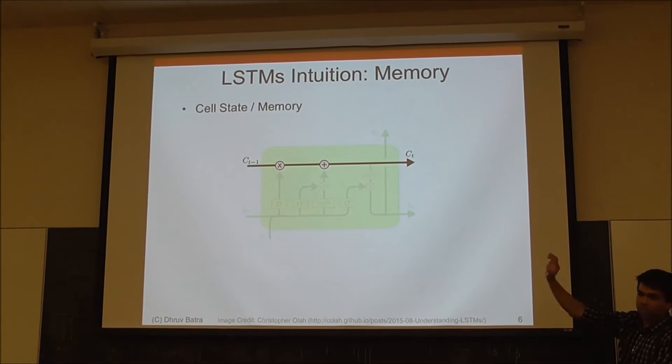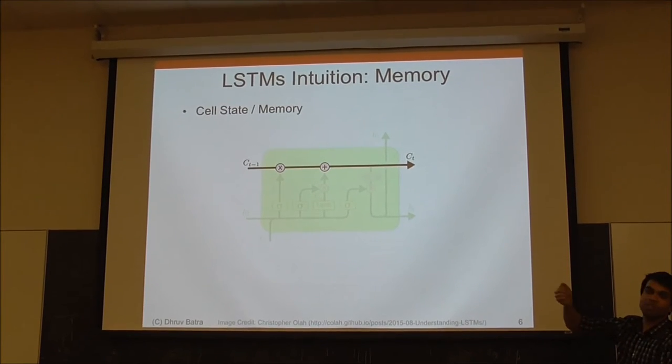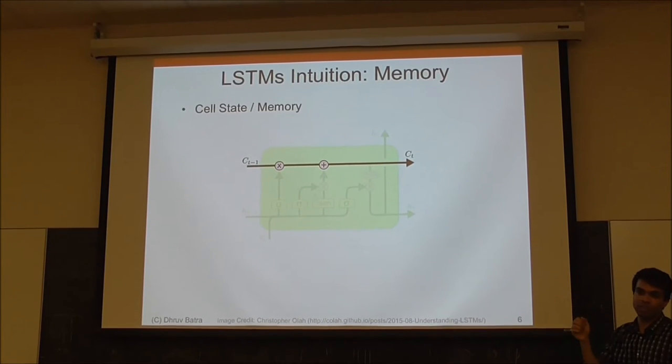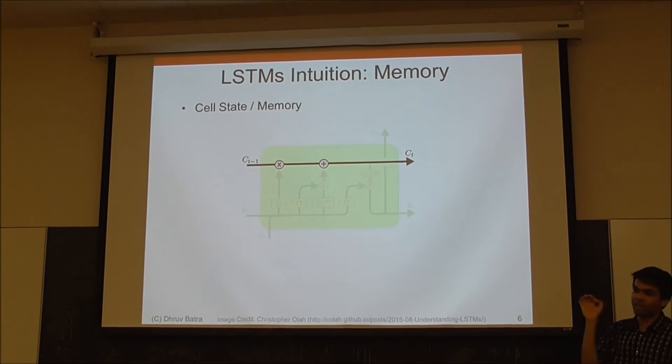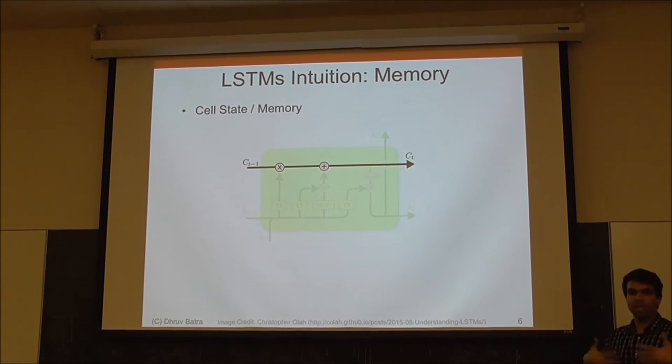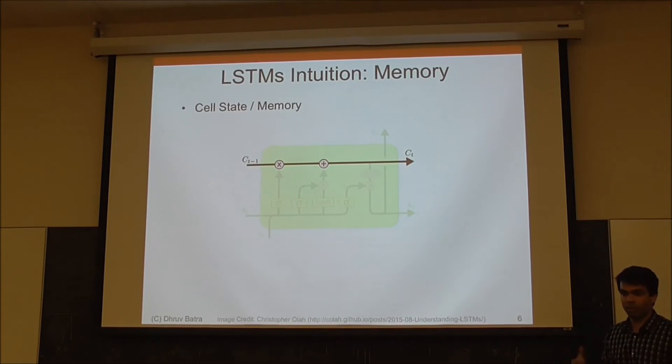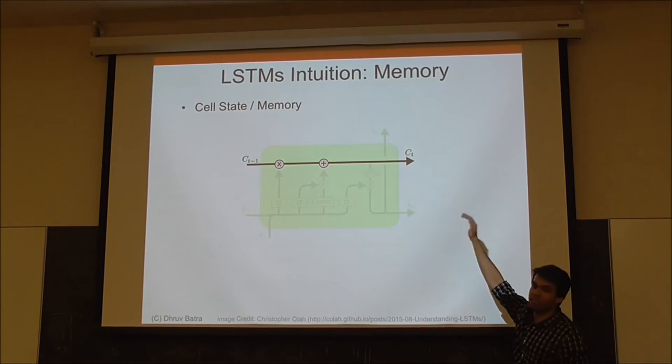Think of this as some d-dimensional thing. It has d bits, and every dimension you're hoping will learn something. For example, if a bracket opens, maybe one of the dimensions just becomes on till that bracket closes. This is something that we can post-hoc reason about, but it's unclear if any of this is learned, and that's what the paper is trying to explore. That's this memory vector or state vector.